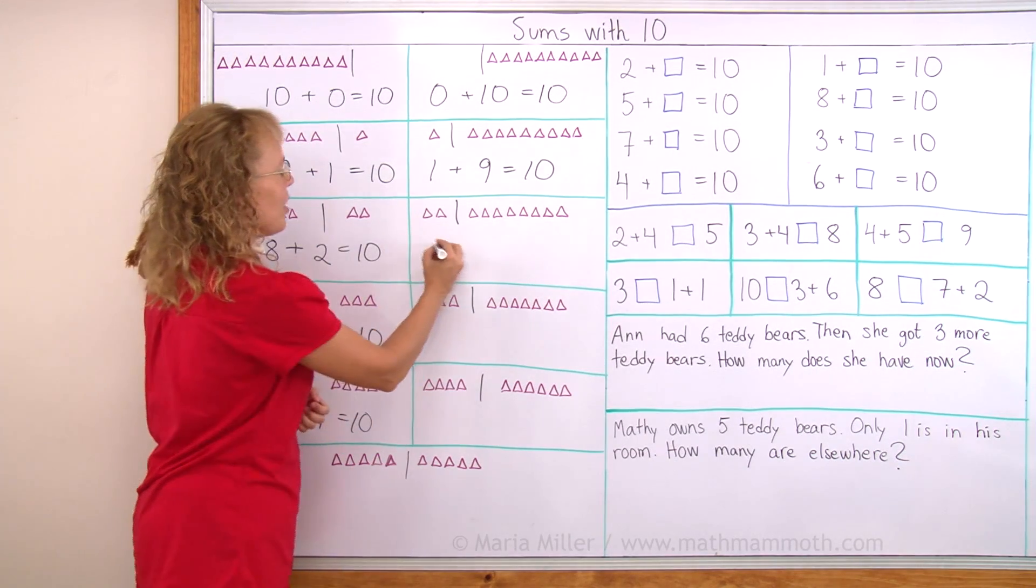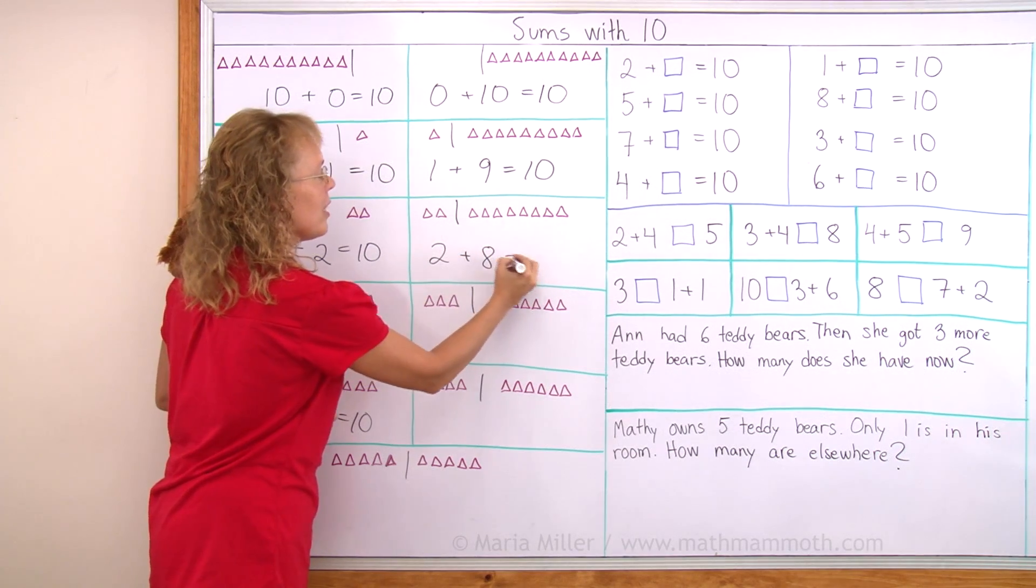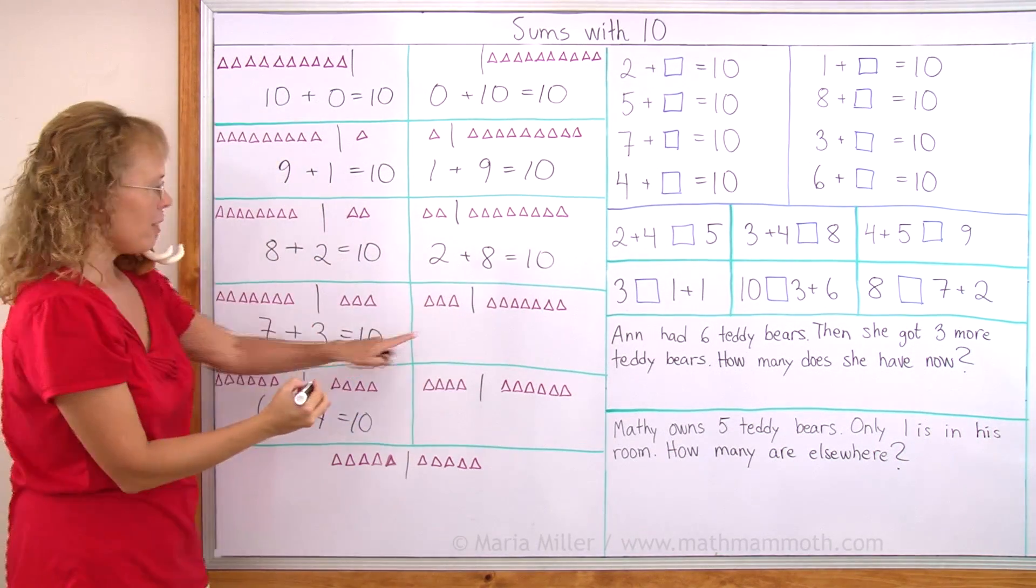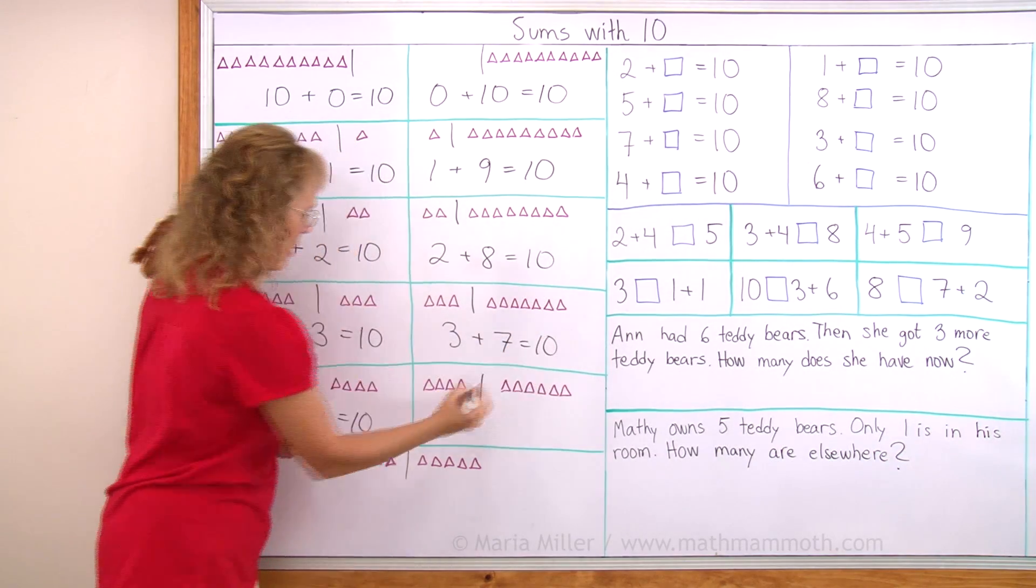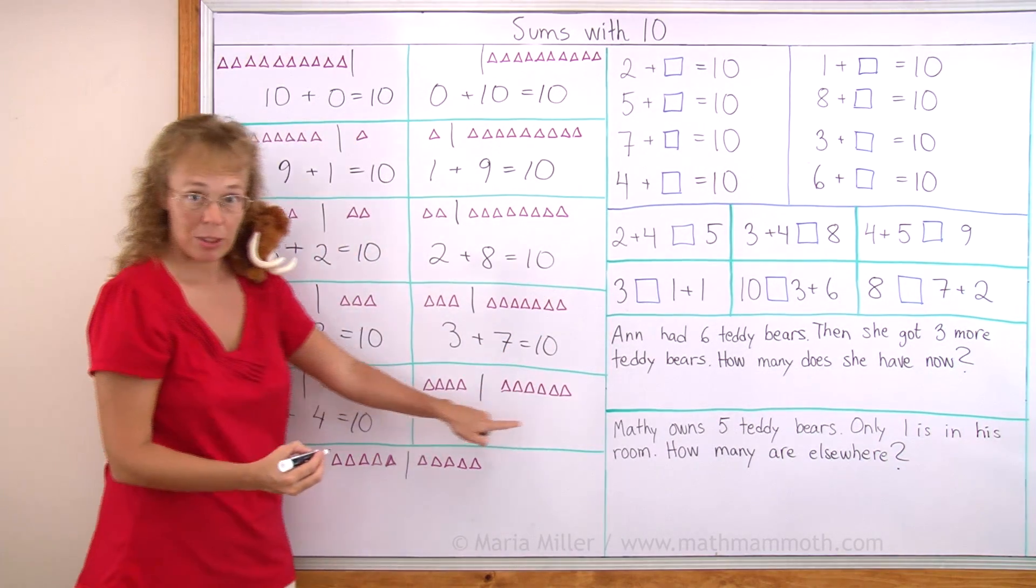And over here 2 plus 8 equals 10. And then over here 3 plus 7 equals 10. And here is 6 and 4. So here 4 and 6.